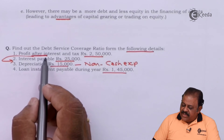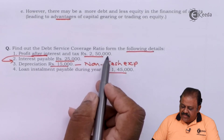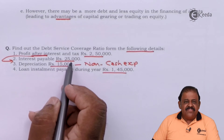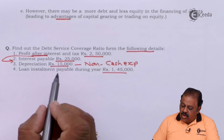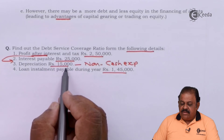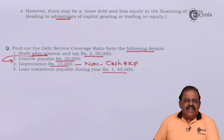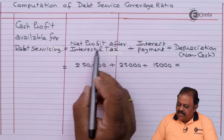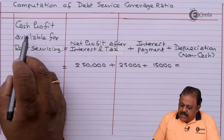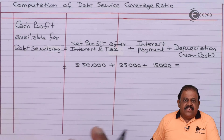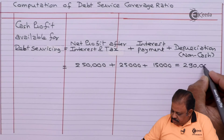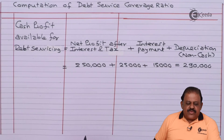Net profit after interest and tax: 2,50,000. To this we add interest 25,000 and non-cash item depreciation 15,000 to arrive at cash net profit before interest. Cash profit available for debt servicing = 2,90,000.